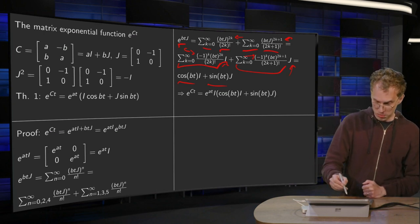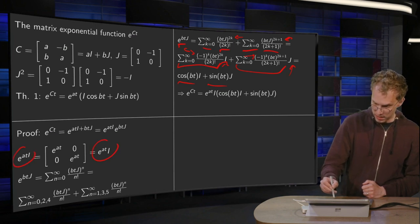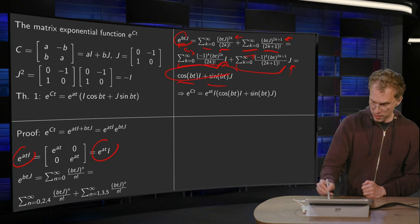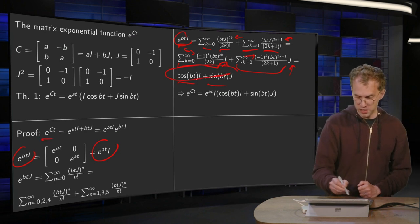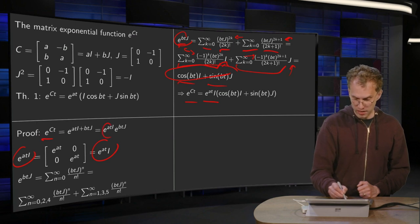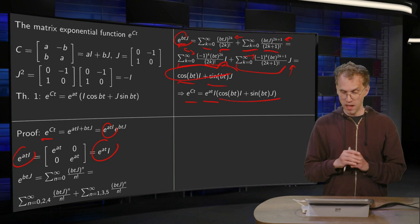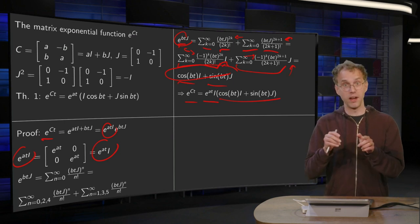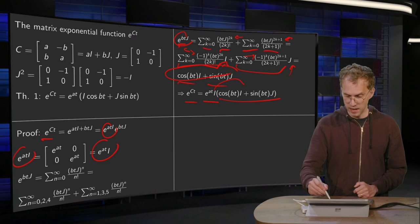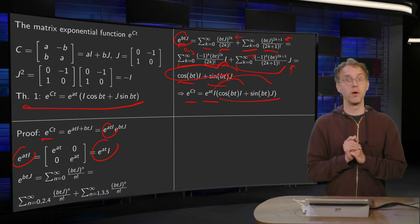And then combining those two, this one over here and this expression over here, we get e to the power ct equals e to the power at times i times e to the power bt times j. And then of course you can have i times i - this i times i is just i, and i times j is j. So that gives us the formula from theorem 1.